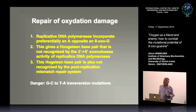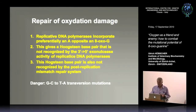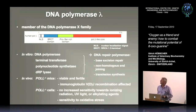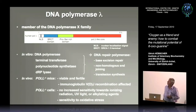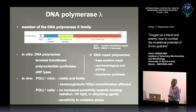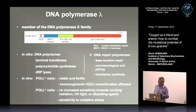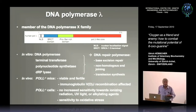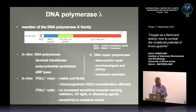We focus today on one protein, DNA polymerase lambda, which we have studied in collaboration with Giovanni Maga from Pavia. Polymerase lambda is a small protein of about 65 kDa with multiple activities: polymerase, terminal transferase, polynucleotide synthase, and dRP lyase. It is involved in base excision repair, non-homologous end joining — the least accurate double-strand break repair mechanism — as well as translesion synthesis.